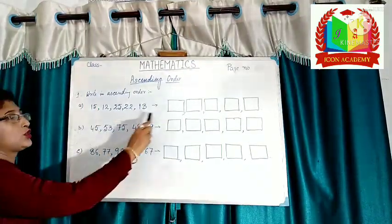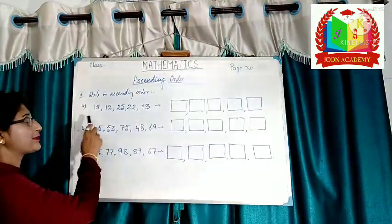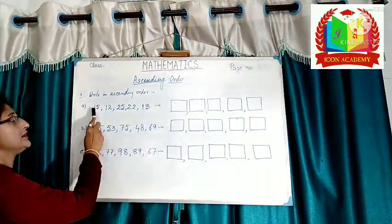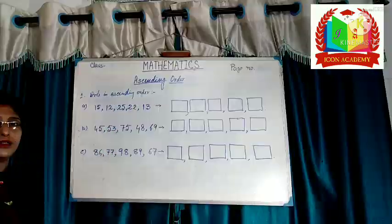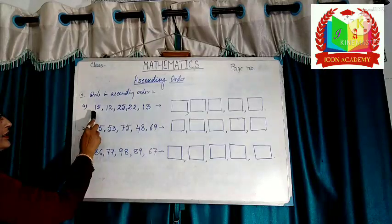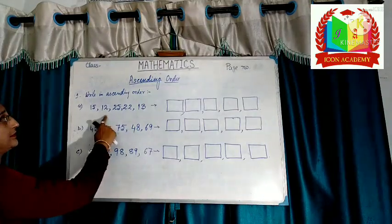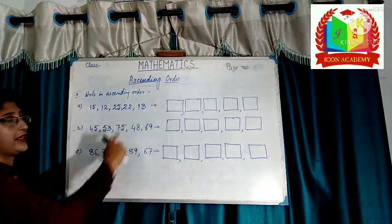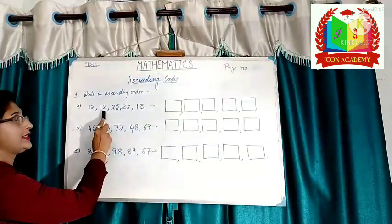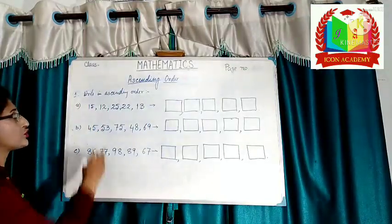These are two digit numbers. At first, see the tens place. Numbers in the tens place are 1, 1, 2, 2, 1. So there are three 1s at the tens place. Now see the ones place of these numbers. The digits are 5, 2, and 3. 2 is less than 3 and less than 5. So the smallest number is 12.